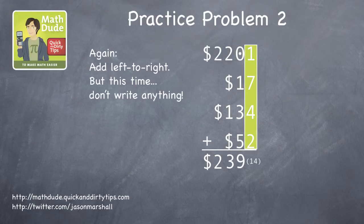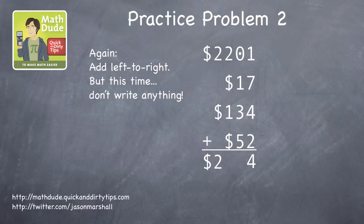Fourteen is the same as one ten in four ones, so put the four in the ones spot, and push the one onto the tens column. That now gives us ten in the tens column, so write zero there, and push the one into the hundreds column. Adding these up, we get $2,404.